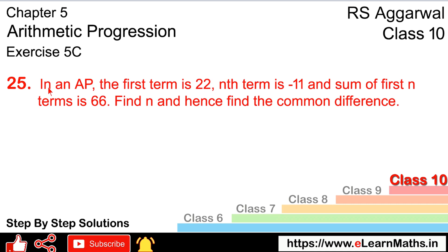Let's do question number 25 of exercise 5c, that is arithmetic progression. Question number 25: in an AP, the first term is 22, the nth term is minus 11, and the sum of first n terms is 66. Find n and hence the common difference.